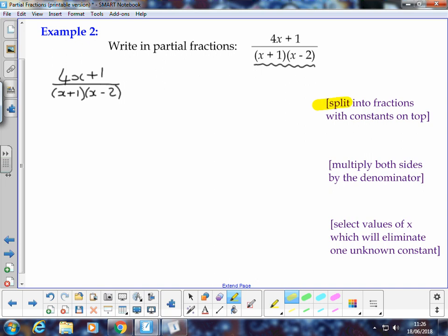I'll put a wee bit of highlight here, but the first thing we're going to do is to split into fractions with constants on top. What that means is we have a general form that we use for this. So we're going to split it into as many fractions as we have distinct linear factors on the denominator.